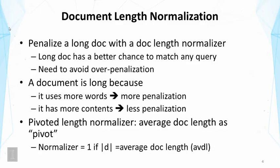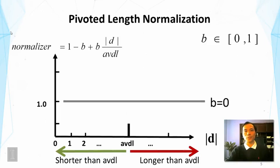A method that has been working well based on research results is called pivoted length normalization. The idea is to use the average document length as a pivot — as a reference point. That means we assume that for average-length documents, the score is about right, so the normalizer would be one. But if a document is longer than the average document length, there will be some penalization, whereas if it's shorter, there is even some reward. This is illustrated using this slide.